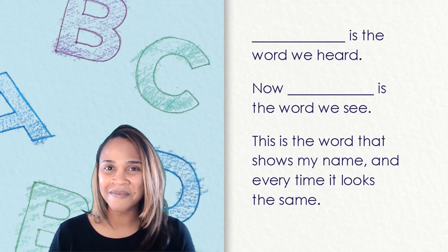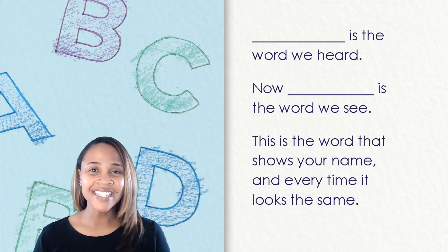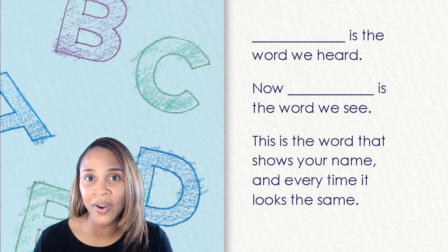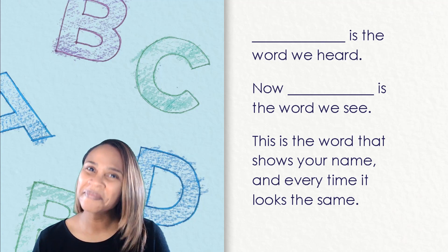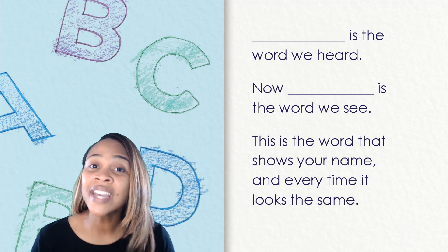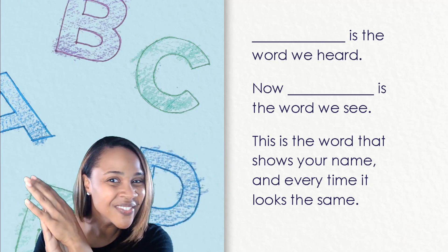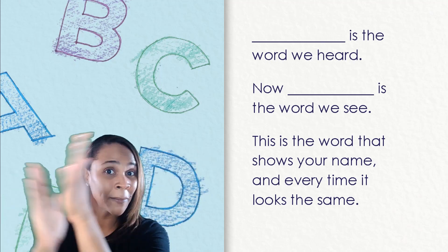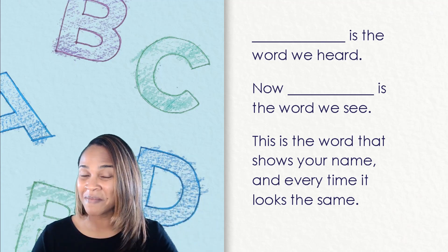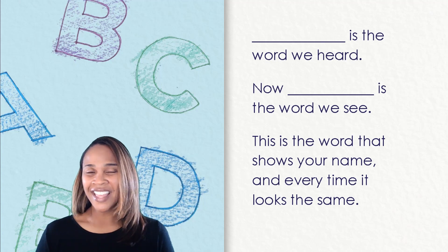How about we try it again? But this time we use your name. Are you ready? Now it's time to read through the chant again, and this time we're going to use your name. What is your name? Great. So when I clap my hands, that's when I want you to say your name in the chant. Ready? Here we go. Is the word we heard. Now is the word we see. This is the word that shows your name, and every time it looks the same. Awesome job saying your name in my chant. Thanks for helping me.